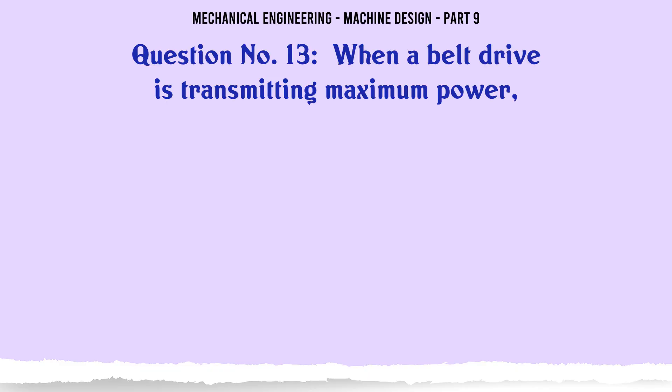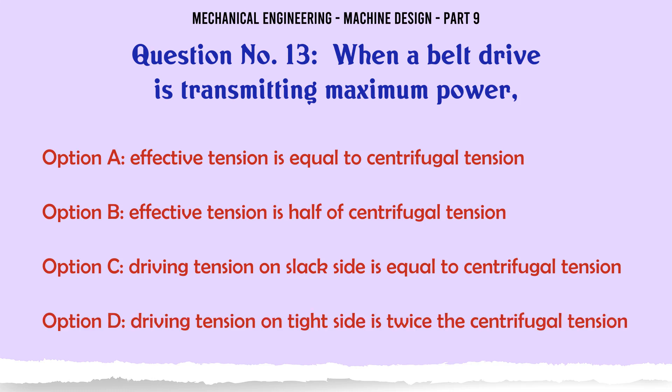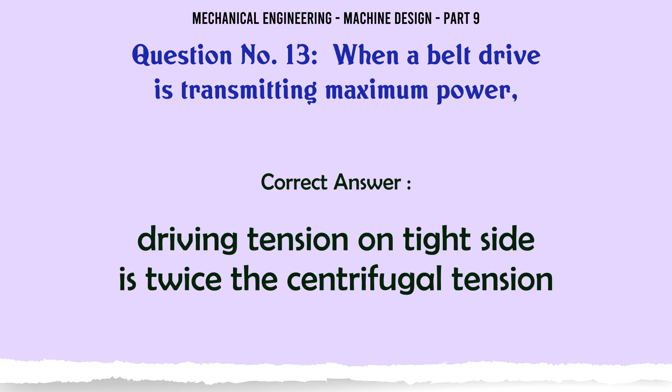When a belt drive is transmitting maximum power: A. Effective tension is equal to centrifugal tension, B. Effective tension is half of centrifugal tension, C. Driving tension on slack side is equal to centrifugal tension, D. Driving tension on tight side is twice the centrifugal tension. The correct answer is Driving tension on tight side is twice the centrifugal tension.